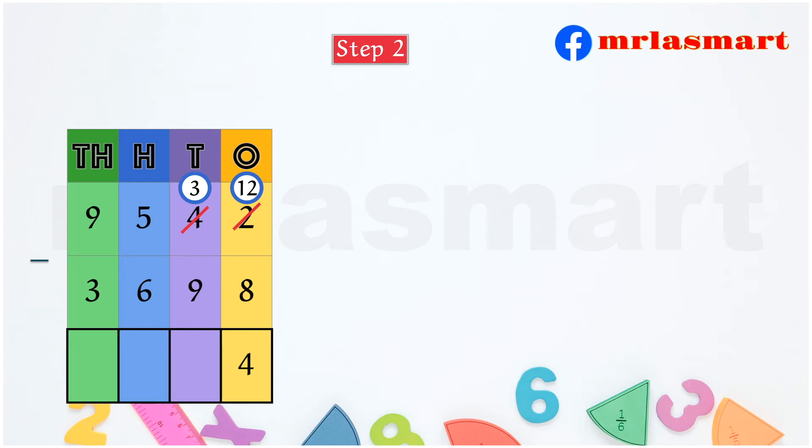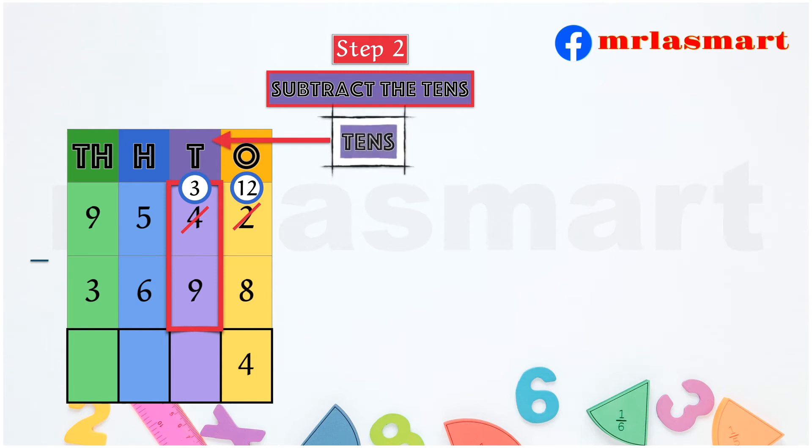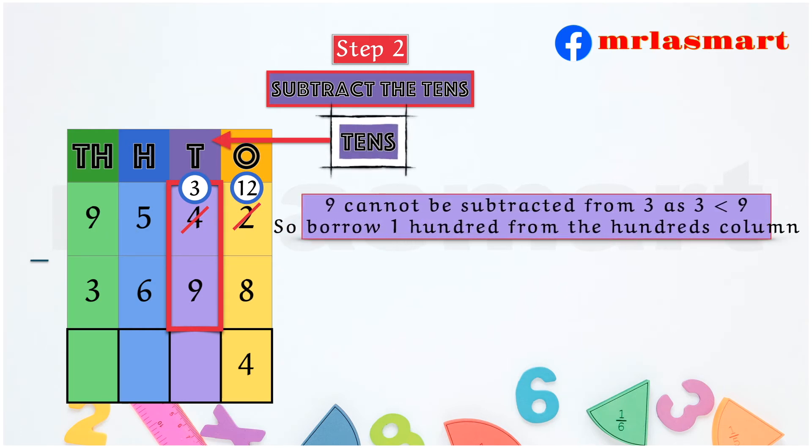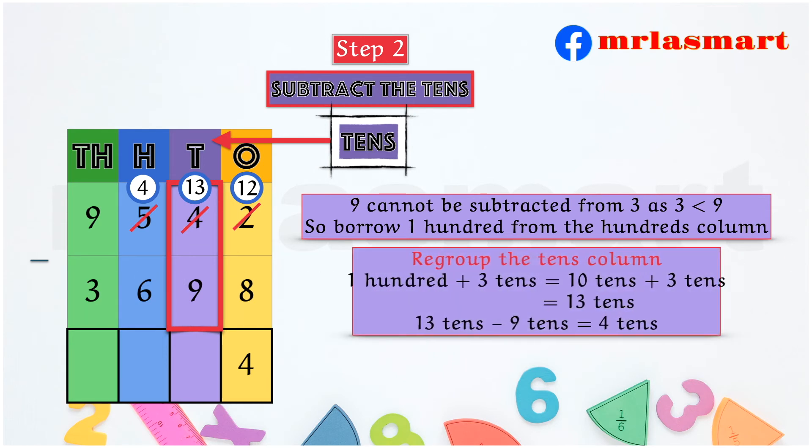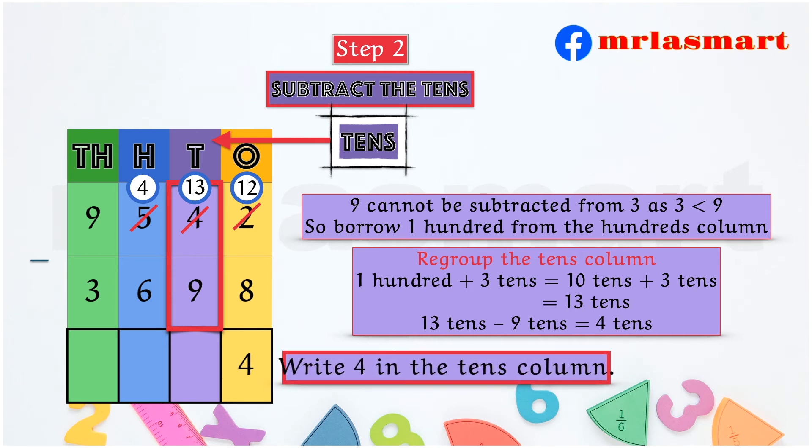Step 2. Subtract the 10s. 9 cannot be subtracted from 3 as 3 is less than 9. So, borrow 100 from the 100s column. Regroup the 10s column. 100 plus 3 tens equals 10 tens plus 3 tens equals 13 tens. 13 tens minus 9 tens equals 4 tens. Write 4 in the 10s column.